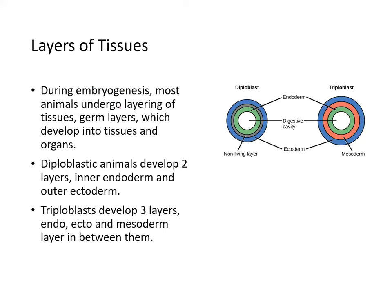During embryogenesis, most animals undergo layering of tissues called germ layers, that develop into tissues and organs. Diploblastic animals develop two layers: inner endoderm and outer ectoderm. A diploblast is shown here with ectoderm in blue and endoderm in green.